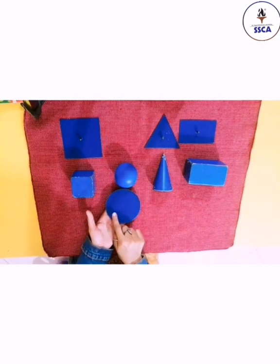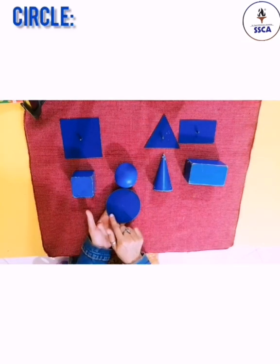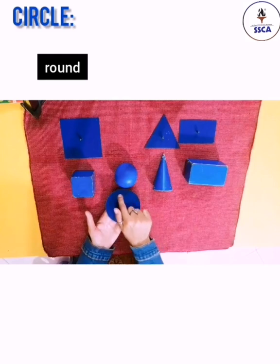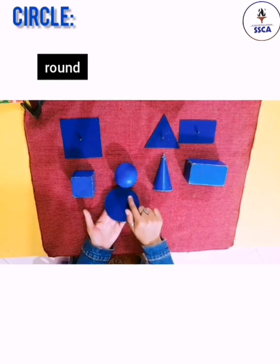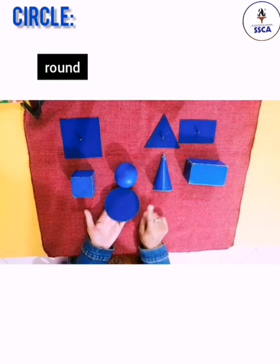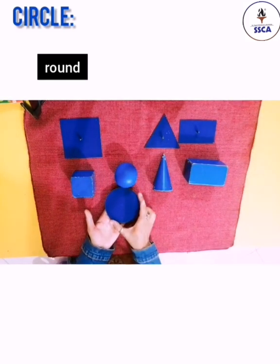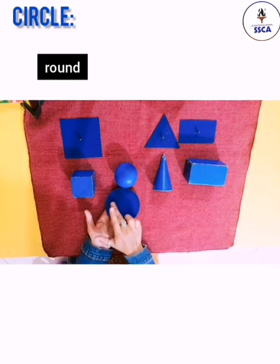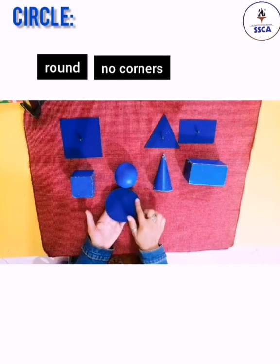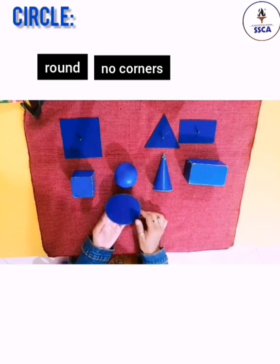Now move on to another shape. Its name is circle. It is round — kaisa hota hai ye? Round hota hai. It has no corners.